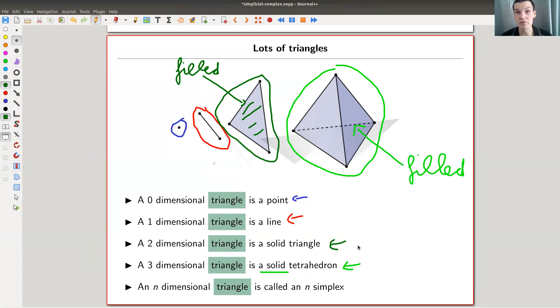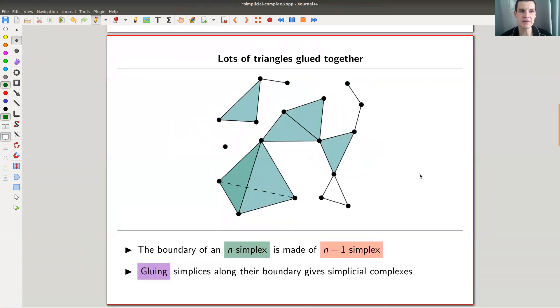And you would like to consider spaces that are built out of triangles, because why? Because triangles are easy. So let's have a look. Here's an example of a space that is glued together from triangles. So here's a triangle, two dimensional one, here's another one, here's another one, here's another one.